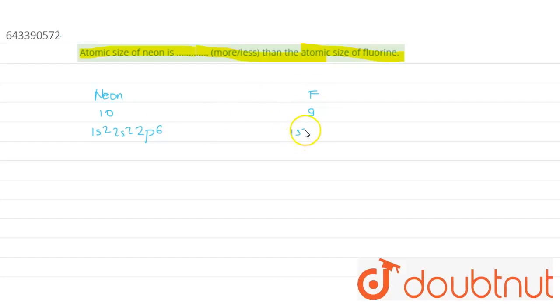So it will have 1s², 2s², 2p⁵. So here you can see that the outer orbital of neon is fully filled.